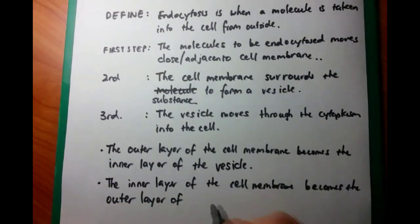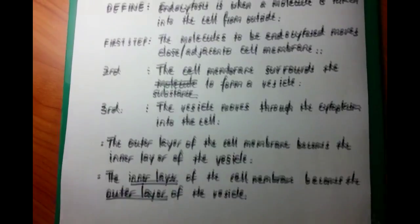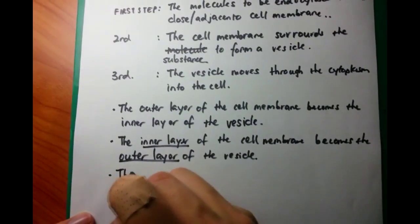Endocytosis is an active process. It requires energy in the form of ATP, so we should write that as well.